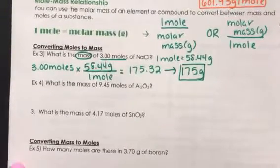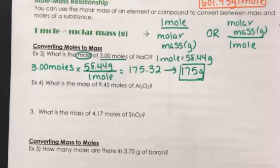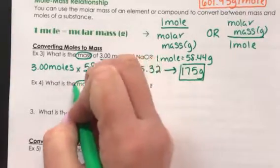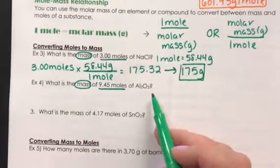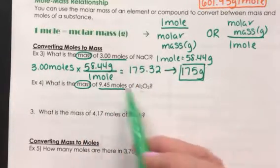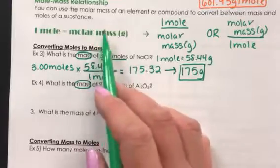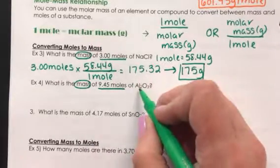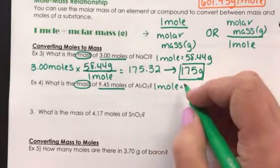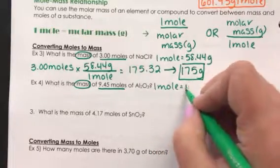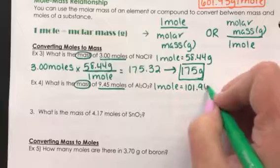Alright, let's do another example with this new idea of converting between units. We need to determine the mass of 9.45 moles of aluminum oxide. Just like before, to convert between the two, we need the molar mass. So I need to add up two aluminums and three oxygens from the periodic table, which is 101.96 grams.